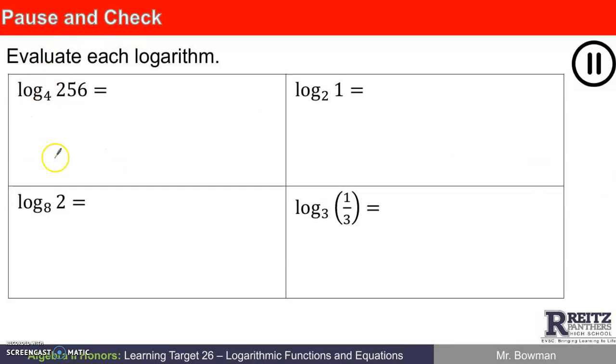For log base 4 of 256, what power of 4 gives you 256? Let's see. 4 squared is 16. 16 times 4 is 64. That's 4 to the third power. 64 times 4 is 256. That means 4 to the fourth power is 256. So log base 4 of 256 is 4.